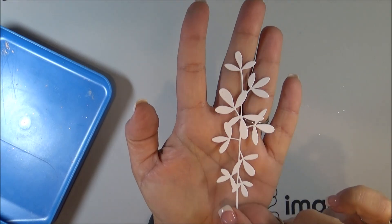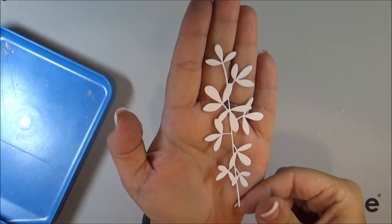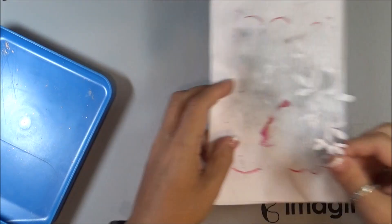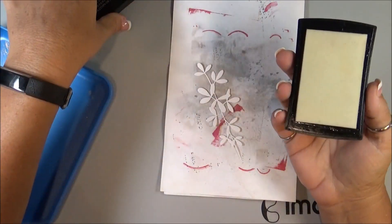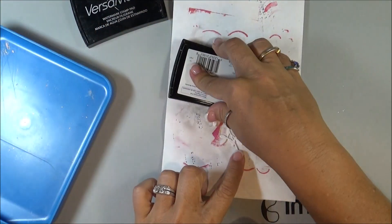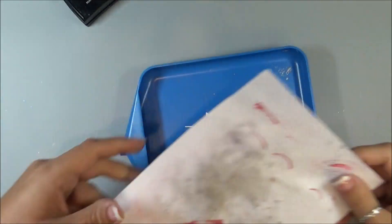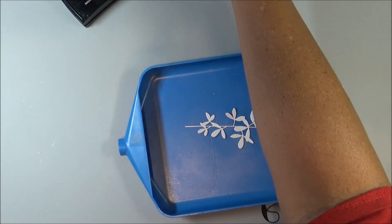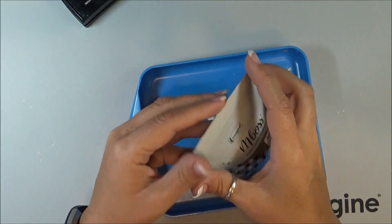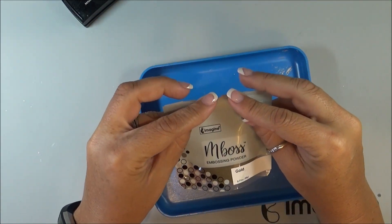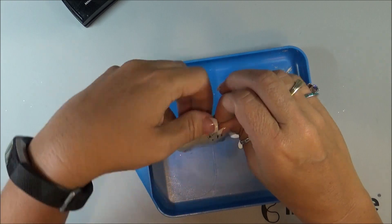Okay, so the next step, I took a die cut of some leaves, and then I'm just going to take my Versamark and just pat it over the top, and then put it in my embossing tray so I don't get powder everywhere, and then taking the gold embossing powder.